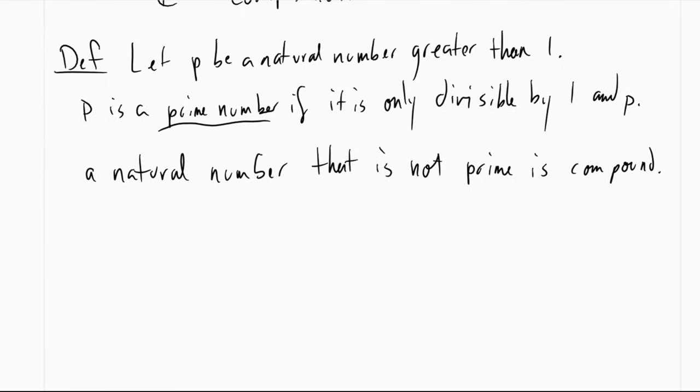So if we want to look at the set containing all prime numbers, this actually has a special name as well. That's going to be P, which is going to be 2, 3, 5, 7, 11, and so on.